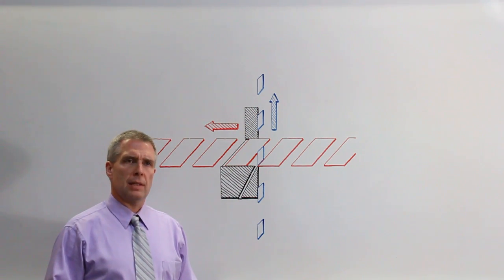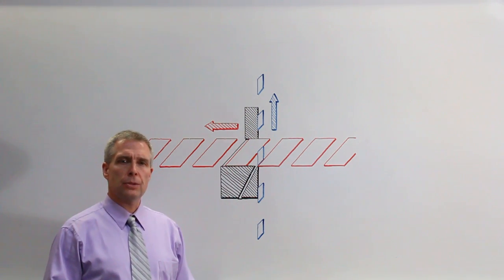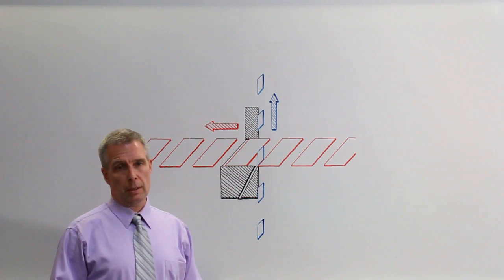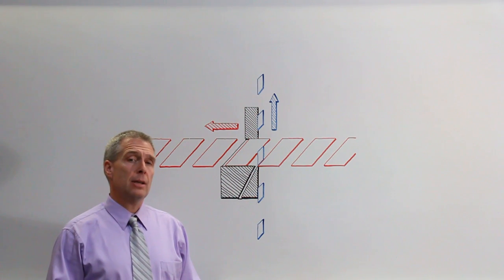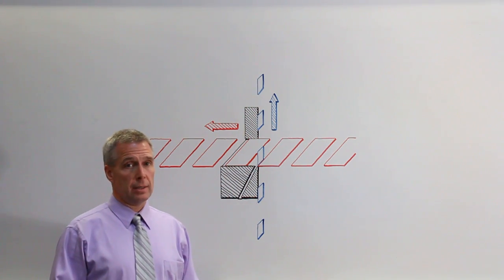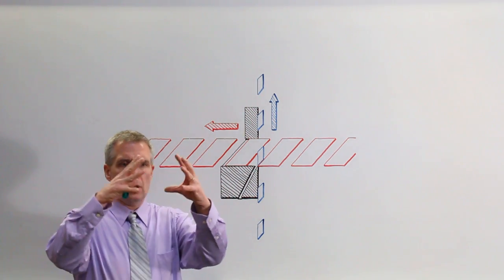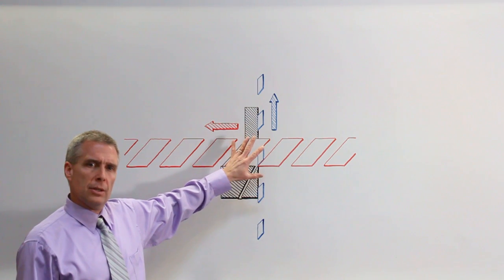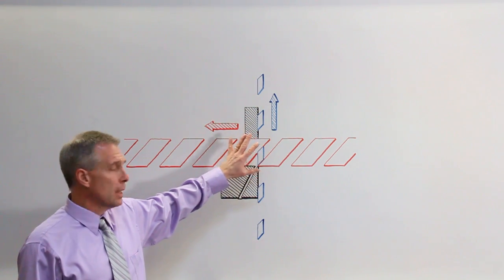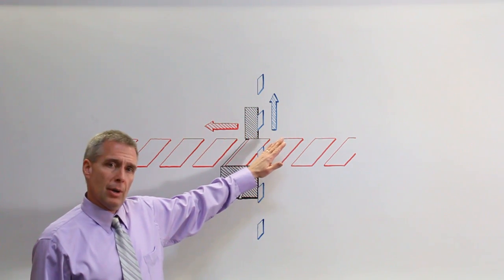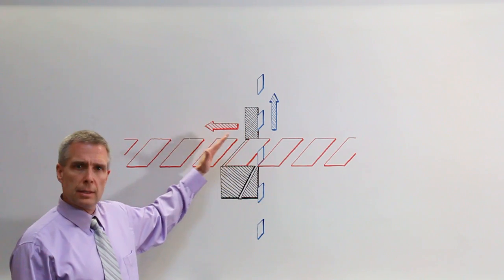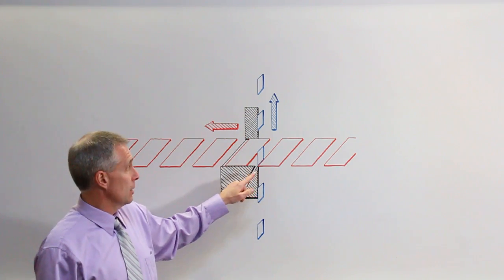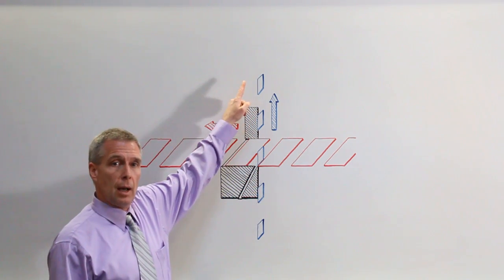The simple concept of intersecting vanes allows us to create a positive displacement steam expander — an expander that harnesses the energy in pressurized steam through a change in volume. The vanes travel through a common intersection. The red vanes, called the primary vanes, travel from right to left, and the blue vanes, called the secondary vanes, travel from bottom to top.